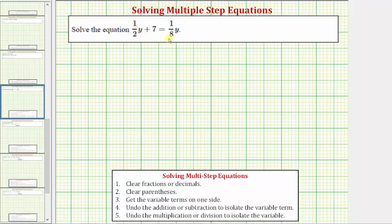To clear the fractions from an equation, we multiply both sides of the equation by hopefully the least common denominator, but any common denominator would work. Our goal is to solve the equation 1½y + 7 = 1⅛y. Because the denominators are 2 and 8, the least common denominator is the least common multiple of 2 and 8, which is 8.